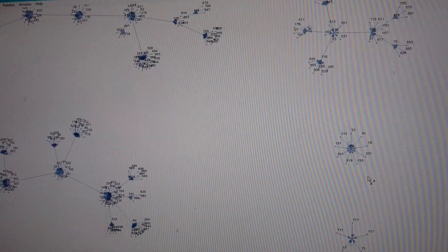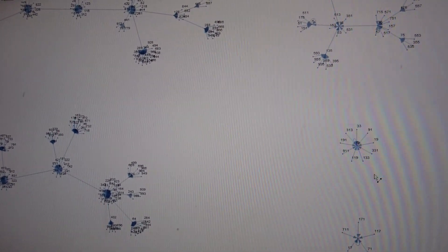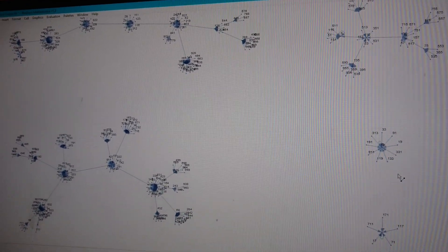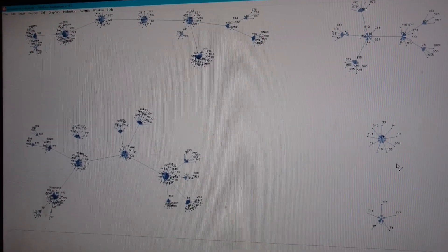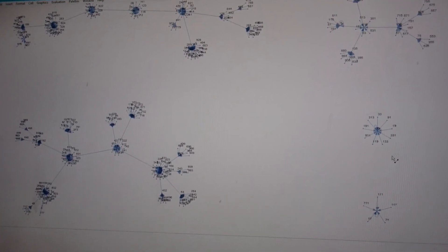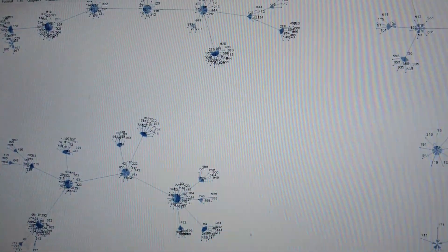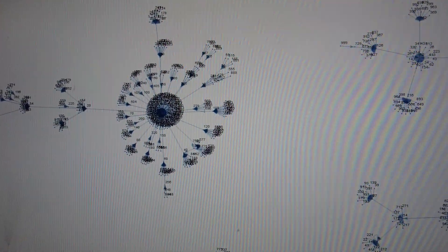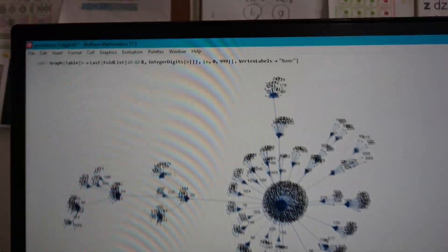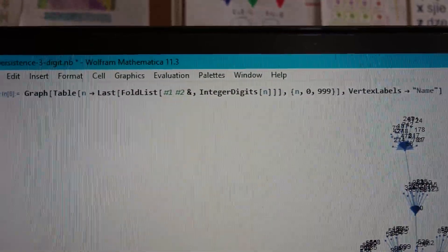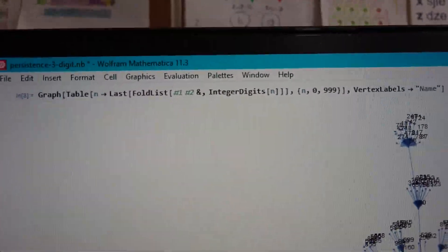But how did you program this? How did you make this? Did you include all three digit numbers to get these trees? And can you show the code? How you made it? This. This is the code. This is the beauty of Wolfram. That you can have just one line code. It's so advanced.